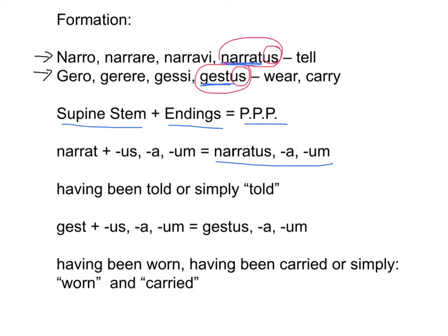In another example, gest- is the supine stem. -us/-a/-um is the ending. Together: gestus, gesta, gestum, which means 'having been worn,' 'having been carried,' or simply 'worn' and 'carried.'